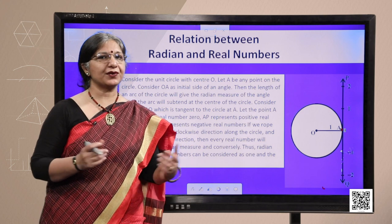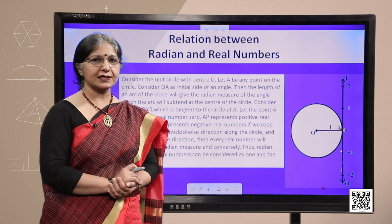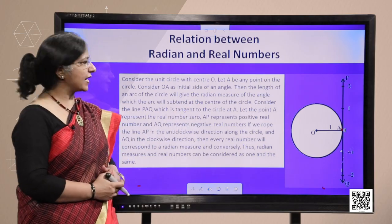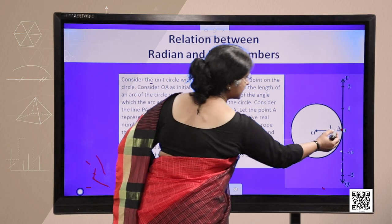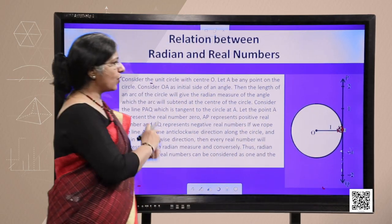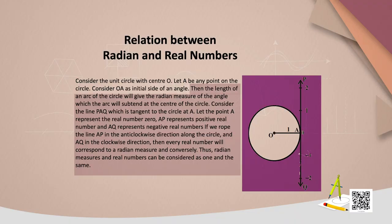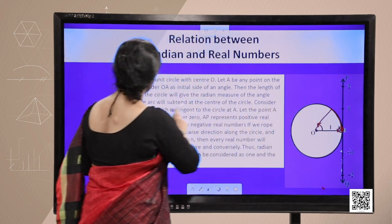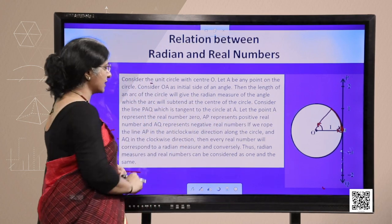Now, the relation between radian and real numbers. Radians are nothing but real numbers, that we can show with the help of this diagram. If you consider a unit circle with centre O, and let A be any point on the circle, where OA represents the initial side of the angle, then the length of the arc of the circle will give the radian measure of an angle, which the arc will subtend at the centre of the circle.